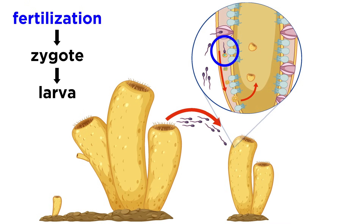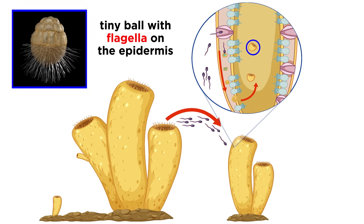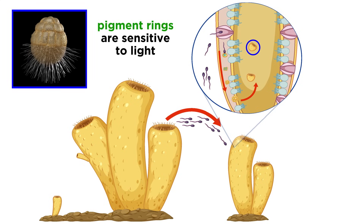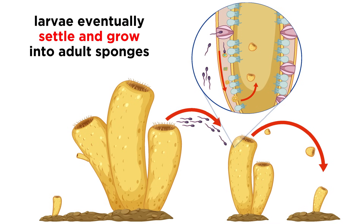Once an egg cell is fertilized, it develops into a zygote and then into one of four types of larvae. All of them are basically tiny cell balls with flagella that line their epidermis. These larvae will then swim for a few days. Fascinatingly, many of these larval sponges possess pigment ring eyes that are sensitive to light and can mediate their locomotion. Eventually they will sink in the water column and crawl until they find a place to settle, then slowly grow into adults.